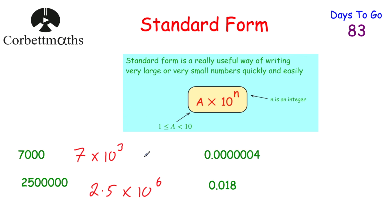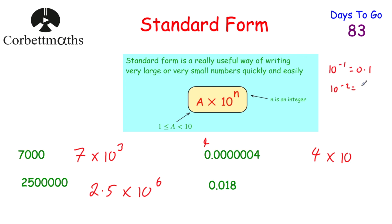Now let's look at writing small numbers in Standard Form. For 0.000004, we need a number between 1 and 10, so we use 4. Since it's a very small number it will have a negative power — for example, 10^(-1) = 0.1, 10^(-2) = 0.01. We need to figure out how many columns to move the 4: that's 7 columns. So it's 4 × 10^(-7).